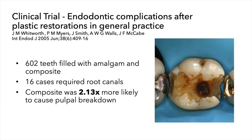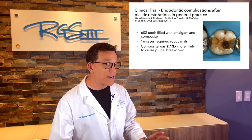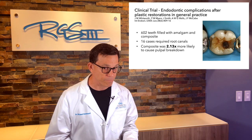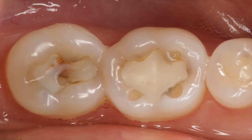Looking at a clinical trial by the Whitworth group from 2005, they looked at 602 teeth filled with amalgam and composite. After three years, 16 cases required root canals, and composite was more than two times more likely to cause root canals than amalgam. So composite is tricky stuff. We have to be really mindful that this material isn't as user-friendly. We can see that erosion and substances from the composite are leaching into the saliva and into the body — though the body can usually take care of these just fine. But composite is not the perfect material that so many people think it is. It breaks down, falls apart over time, and will need to be replaced occasionally.